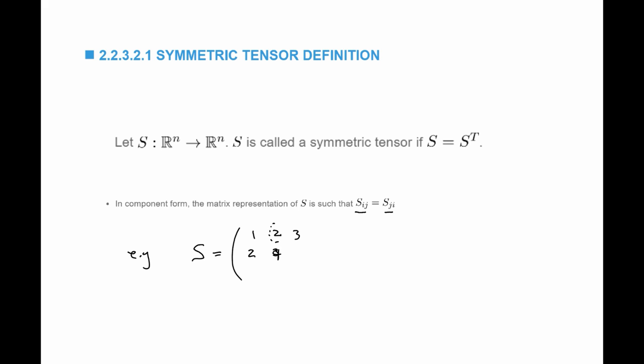Continuing the example, we place 4 and 5 in the appropriate positions. S_{1,3} has to be equal to S_{3,1}, and S_{2,3} has to be equal to S_{3,2}. And so this is a symmetric matrix.